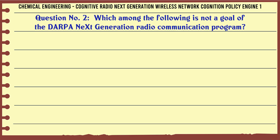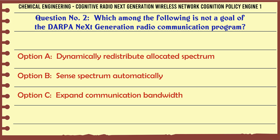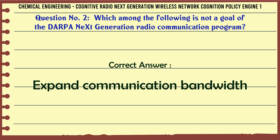Which among the following is not a goal of the Next Generation Radio Communication Program? a. Dynamically Redistribute Allocated Spectrum. b. Sends Spectrum Automatically. c. Expand Communication Bandwidth. d. Select Operating Mode. The correct answer is: Expand Communication Bandwidth.